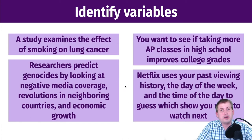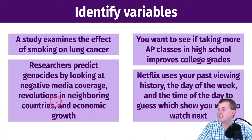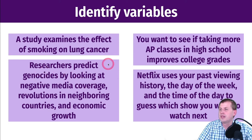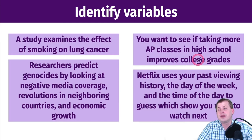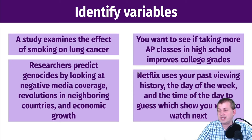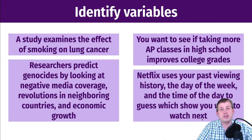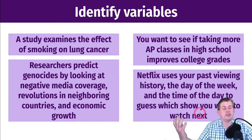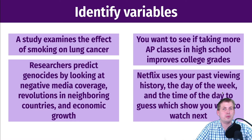Researchers predict genocides by looking at a bunch of variables. The outcome or dependent variable is genocide; the explanatory or independent variables are negative media coverage, revolutions in neighboring countries, and economic growth. For AP classes improving college grades: the outcome is college grades — that's our Y — and AP classes is the X, the explanatory variable. For Netflix: the outcome is the show you want to watch next, and the explanatory variables are your viewing history, time of day, and day of the week.